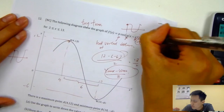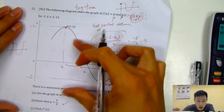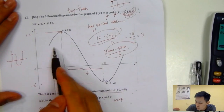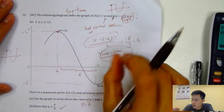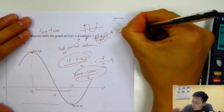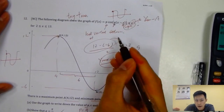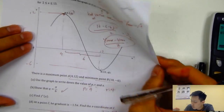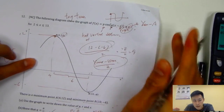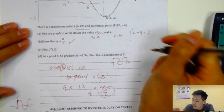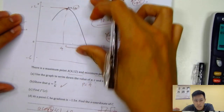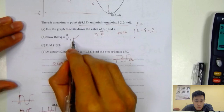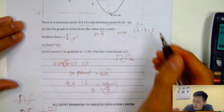Finally, for s: s is the upward or downward shift. The fast method is y_max minus amplitude: 12 minus 9 equals 3. So s equals 3, meaning the graph shifted up by 3 units. Summary: p = 9, q = π/6, r = 4, s = 3.